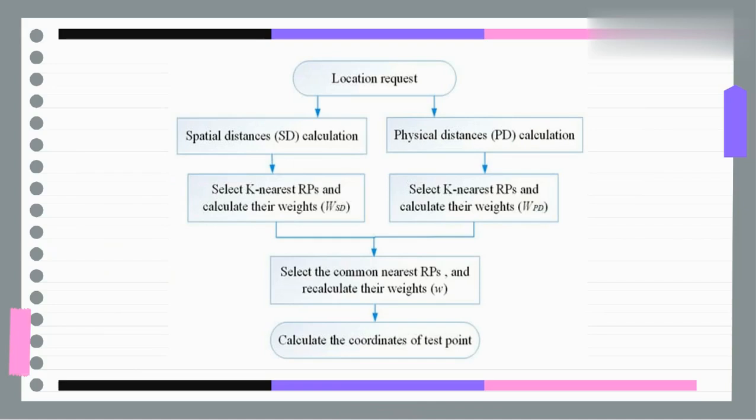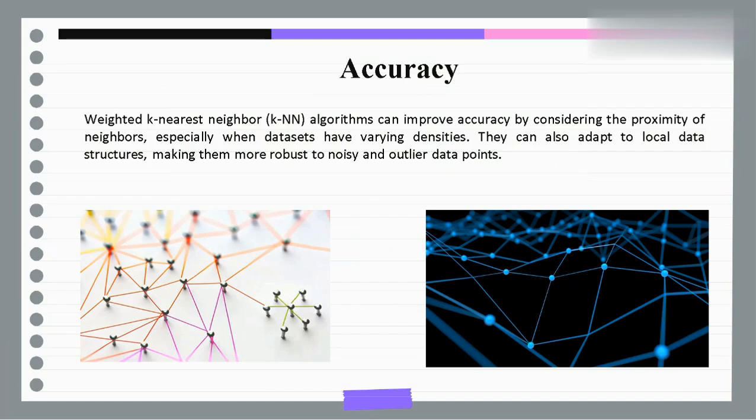Weighted KNN first calculates the distance, finds nearest neighbor, then calculates weight and predicts label. This is how it improves accuracy.